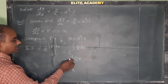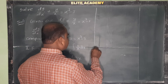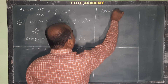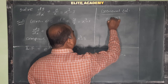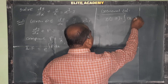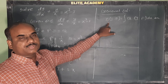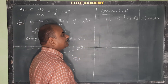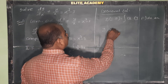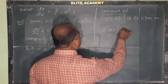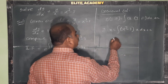Since e power log and log cancel, we get IF = x. The general solution formula is y · IF = integral of Q · IF dx + C. Substituting: x·y = integral of (x³ - 3)·x dx + C.